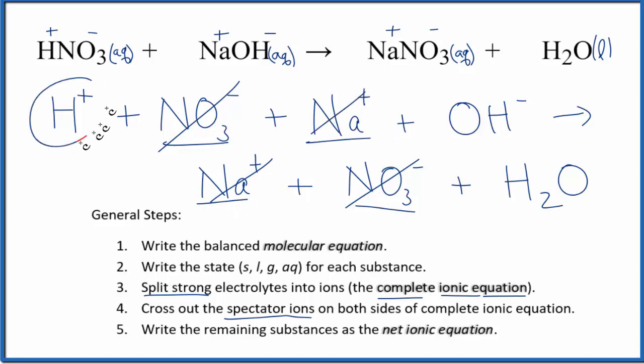So all we're left with is H plus, OH minus, and H2O. This is the net ionic equation. Let's clean it up and rewrite it down here.